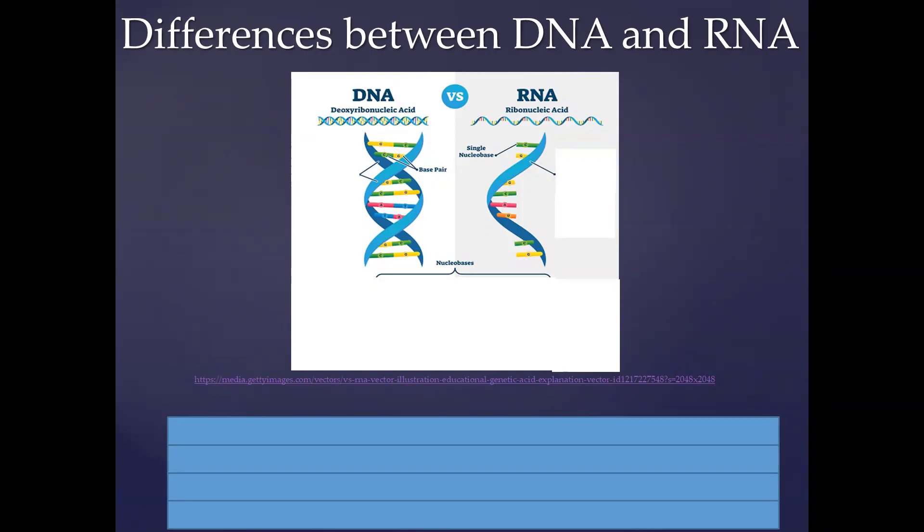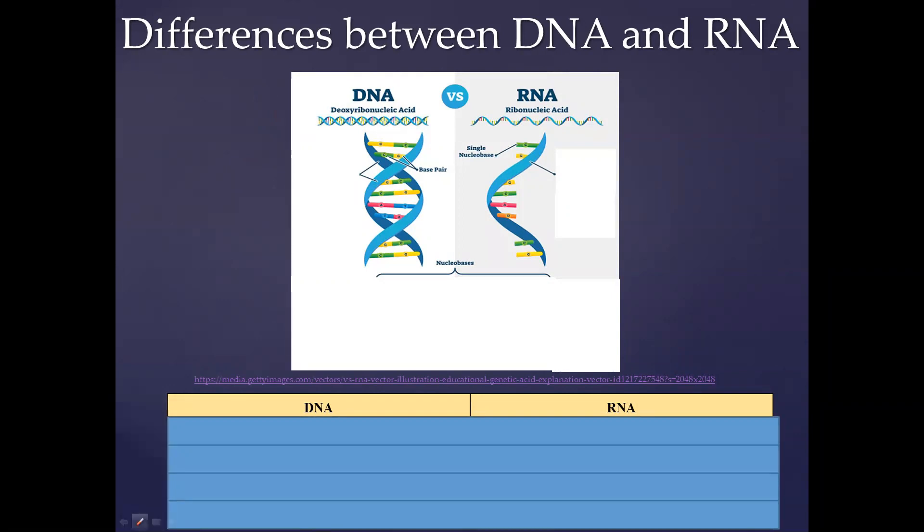The diagram is going to guide us, and we're going to tabulate the differences at the bottom as well. The names themselves give us a good clue on the differences between them. The name DNA stands for deoxyribonucleic acid, and RNA stands for ribonucleic acid.